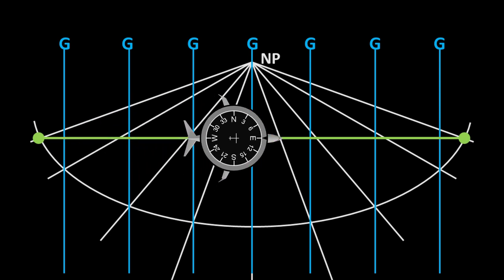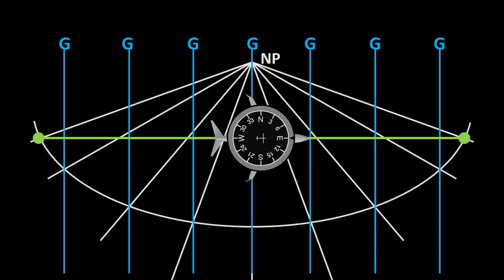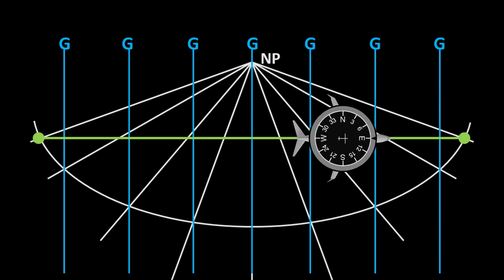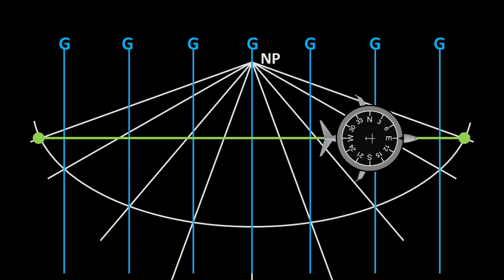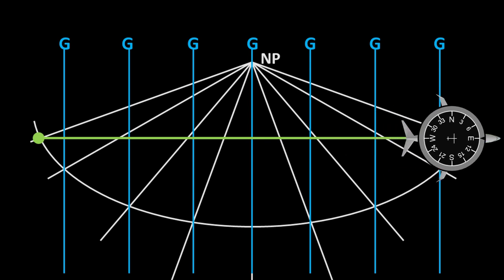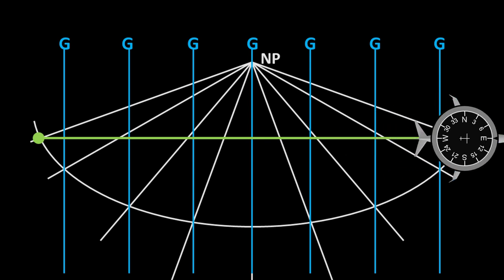The other way to solve this problem is by superimposing a grid and flying by referring to grid north. The aircraft can then maintain a constant grid track. On screen, the grid is represented by the light blue lines. As animated, the aircraft keeps a constant grid track of 090 degrees. Grid navigation is the method used to navigate at higher latitudes, allowing an aircraft to fly a Great Circle Track with a constant track by referring to grid north.